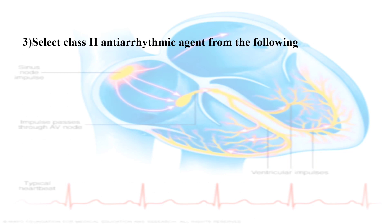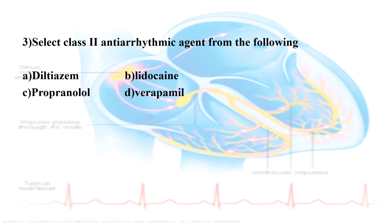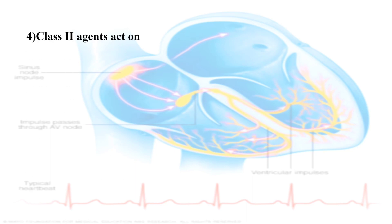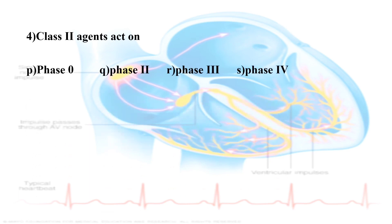Third question: Select class 2 anti-arrhythmic agents from the following. Class 2 anti-arrhythmic agents — in which phase of the action potential do they act? The action potential phases are Phase 0, Phase 1, Phase 2, Phase 3, and Phase 4. The options are Phase 0, Phase 2, Phase 3, Phase 4. Class 2 anti-arrhythmic agents act in Phase 4.